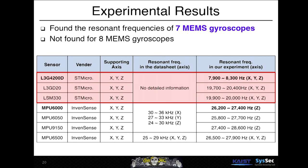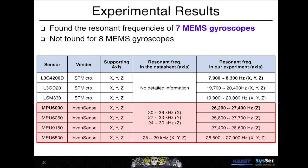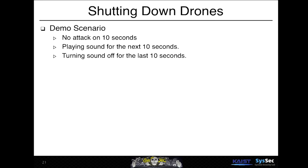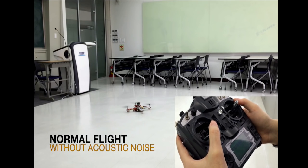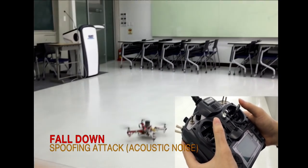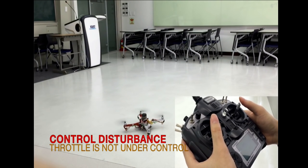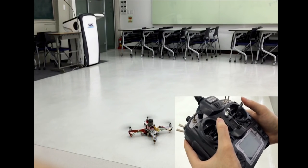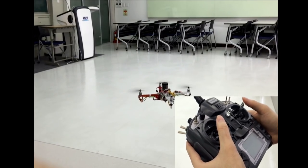The gyroscope from STMicro has resonant frequency in the audible range and across all axes. The gyroscope from InvenSense has resonant frequency only in the X axis but also in the audible range. In the next demo, there is no attack for the first 10 seconds, then sound plays for 10 seconds, then it stops. During normal flight the drone flies fine, but when sound plays it cannot fly. The student tries to control it but fails. After we turn off the sound, it can fly again.